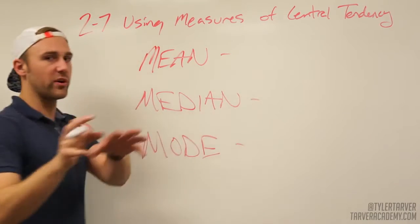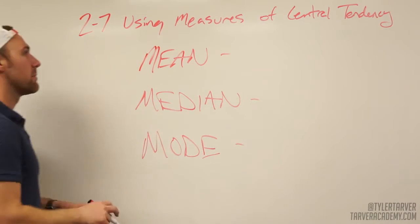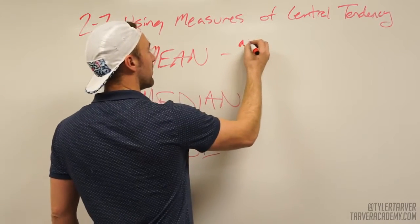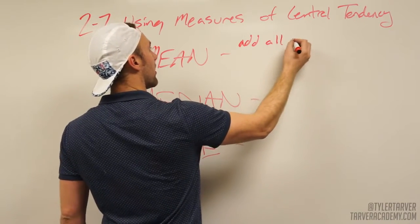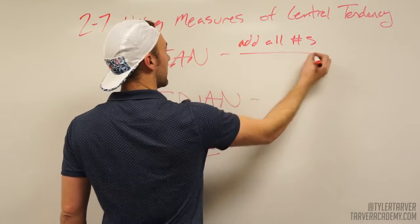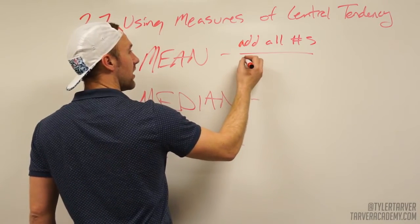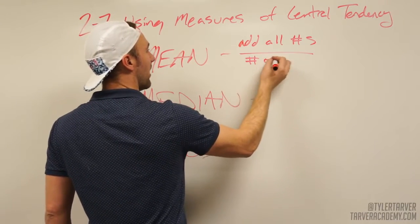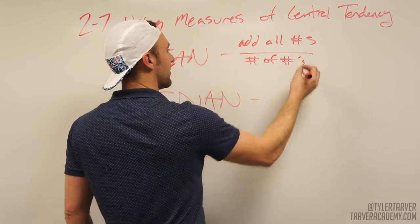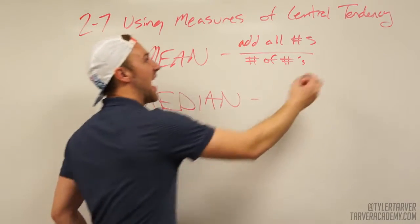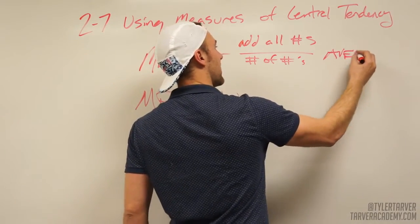Alright, I'm gonna give you the brief synopsis of what they are. Mean is when you add all your numbers and then you divide by the number of numbers. Okay, this is also called the average. Yeah, you guessed it right: average.